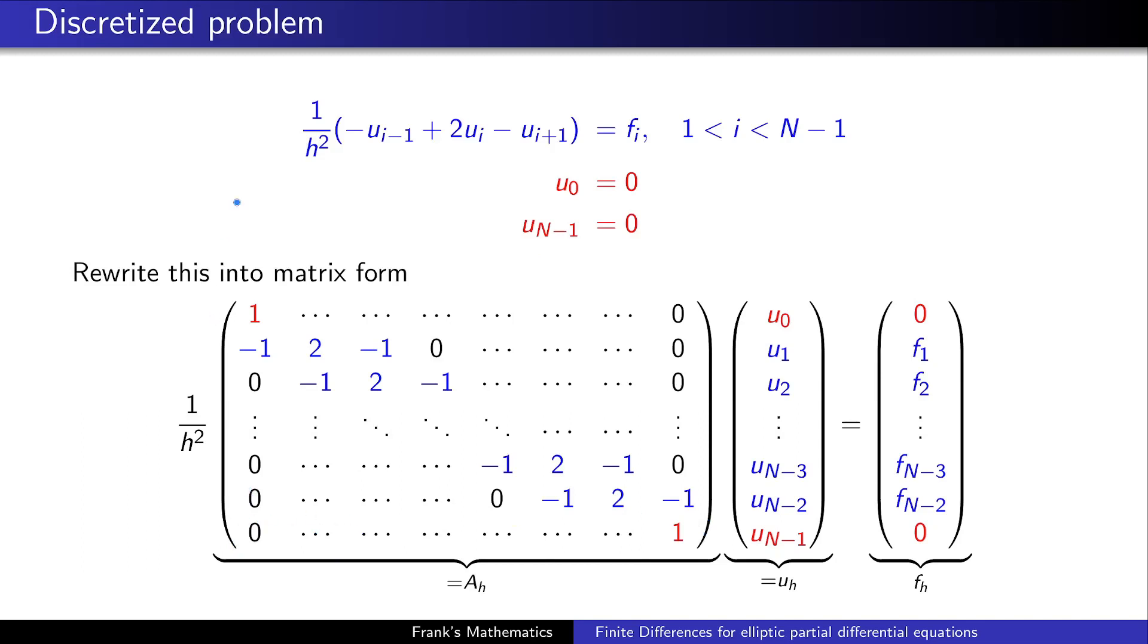More interesting are the approximations in the interior of the interval marked in blue. The one over h squared I put outside of the matrix because now we are focusing only on the coefficients of the u's. We have minus one times u_{i-1} plus two times u_i minus one times u_{i+1}. This expression will transform into a pattern looking like minus one, two, minus one, minus one, two, minus one and so on. This is the matrix vector multiplication of our linear equations. I want to call this matrix A_h, this vector u_h, and the right hand side f_h.